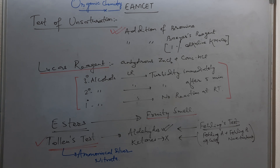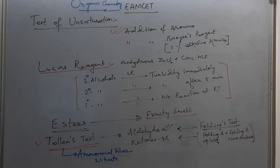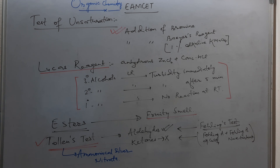Another test used to distinguish between aldehydes and ketones is Fehling test. Fehling solution is an equimolar mixture of Fehling A and Fehling B. Fehling A is aqueous copper sulfate, and Fehling B is sodium potassium tartrate, also called Rochelle salts. When mixed in equal proportion, this reagent gives a red precipitate of Cu2O with aldehydes, but ketones fail to give this test. Even aromatic aldehydes like benzaldehyde do not respond to Fehling test because of their low reactivity.